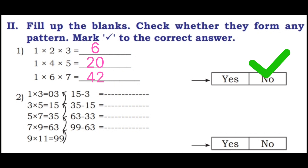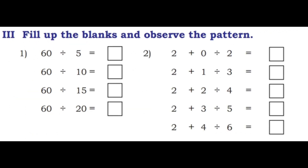Second one: 1×3=3, 3×5=15, 5×7=35, 7×9=63, 9×11=99. The differences are 15 minus 3 is 12, 35 minus 15 is 20, 63 minus 35 is 28, 99 minus 63 is 36. The differences are not equal, so this is also not a pattern. Mark: No.